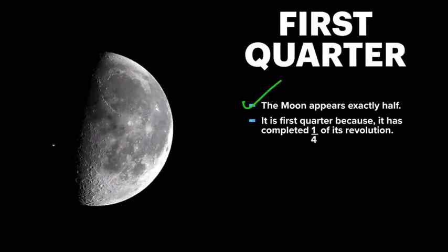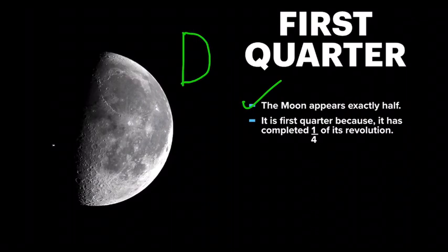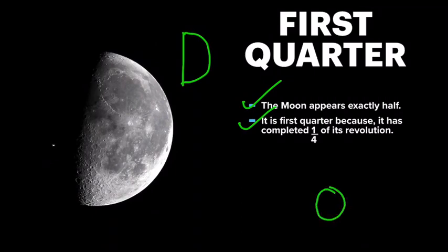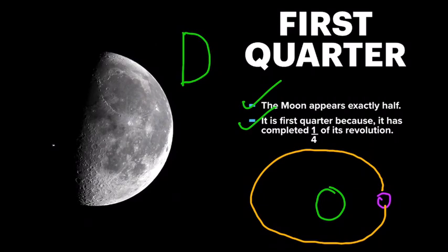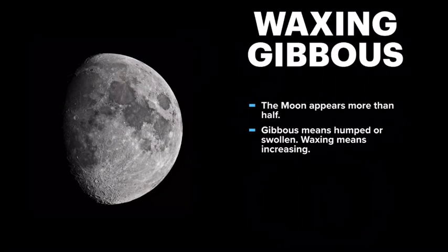Then we come to the first quarter. Here the moon appears exactly half — it looks like half a moon from earth. It is called first quarter because the moon has completed one quarter — one fourth — of its full revolution around the earth. When the moon reaches this position, it is called the first quarter.